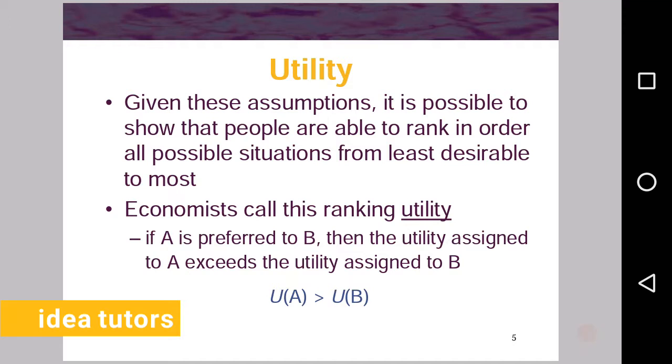Economists call this ranking the utility. That is, if A is preferred to B, then the utility assigned to A exceeds the utility assigned to B, which is denoted U(A) is more than U(B), that is utility of A is more than utility of B.